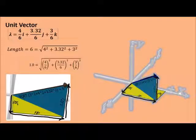Just as in two dimensions, we're going to be looking at the ratio of the lengths in each direction divided by the overall length of our vector.